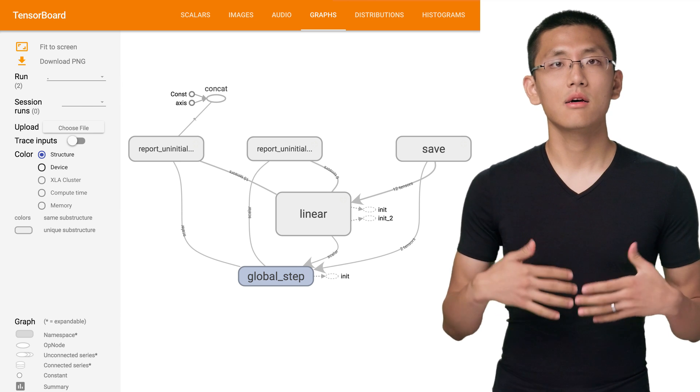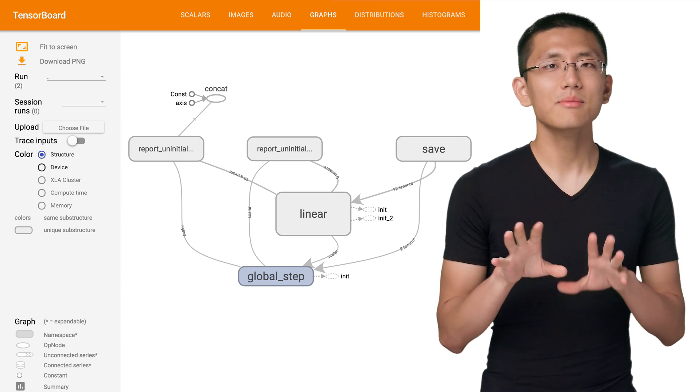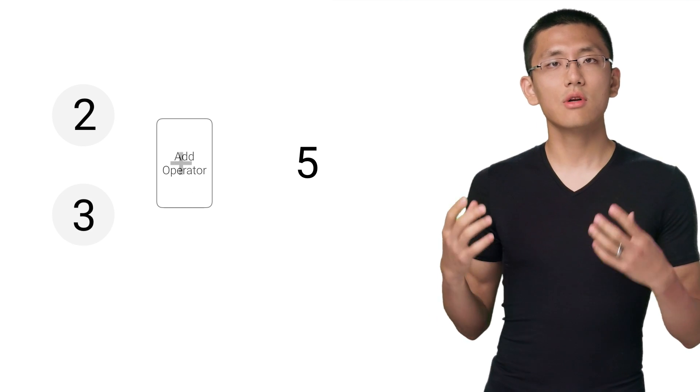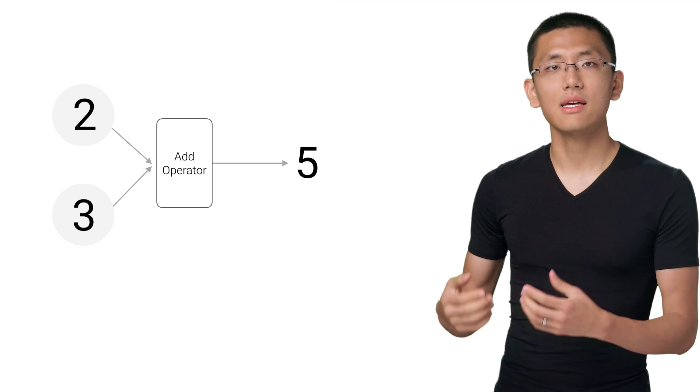TensorFlow uses the idea of computational graphs under the hood. This means that instead of adding two numbers in the traditional sense, it constructs an add operator and passes in as inputs the values being added together. So when we think about TensorFlow training your model, it's really executing everything as part of its graph. TensorFlow can visualize these models so you can see what they look like and, more importantly, ensure that you've wired all the pieces up the way you wanted to.